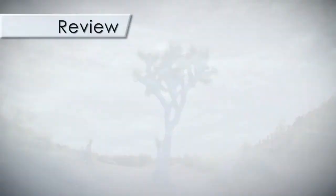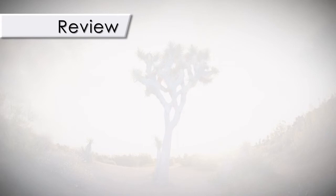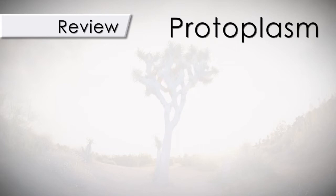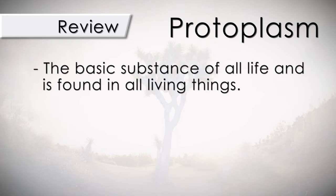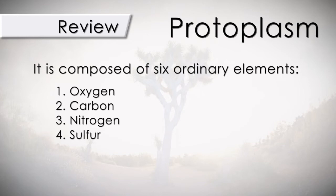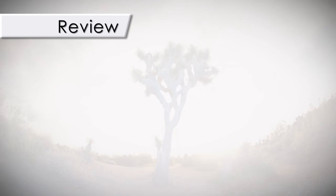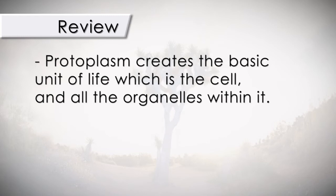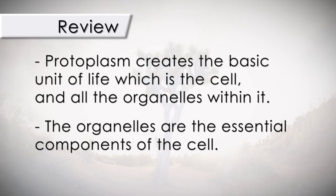Before we move on, here's a quick review of what we have covered in this video. Protoplasm is the basic substance of all life and is found in all living things. It is composed of six ordinary elements: oxygen, carbon, nitrogen, sulfur, hydrogen, and phosphorus. Protoplasm creates the basic unit of life, which is the cell, and all the organelles within it — the organelles are the essential components of the cell. The assigned DNA of each cell is responsible for directing where it goes and what role it will play within the human organism.